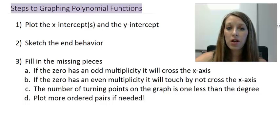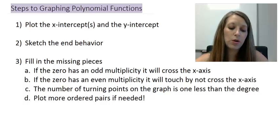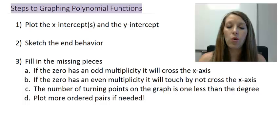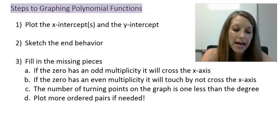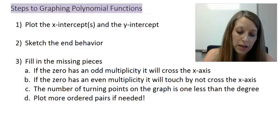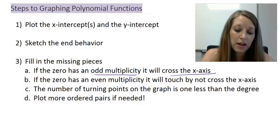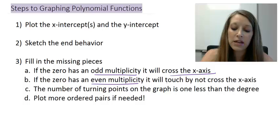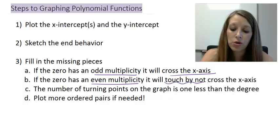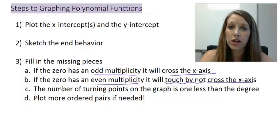Then, from there, you put your end behavior on the graph and you fill in with any other information that you may know. In the last video, we learned that if an x-intercept has an odd multiplicity, then it's going to go through the x-axis at that point. And if it has an even multiplicity, then it's going to hit the x-axis at that point but not cross through it. It's going to bounce back from the same direction it came from.